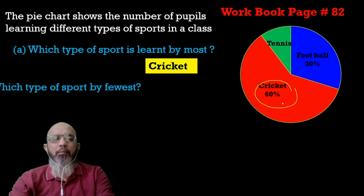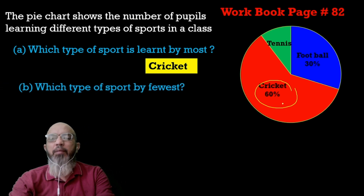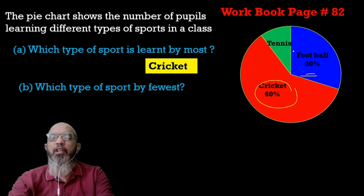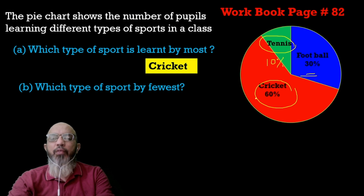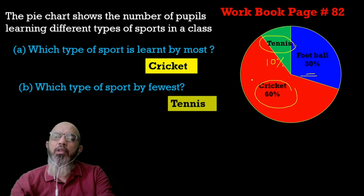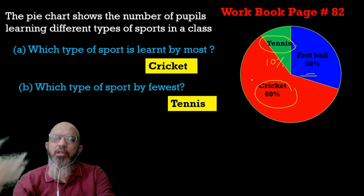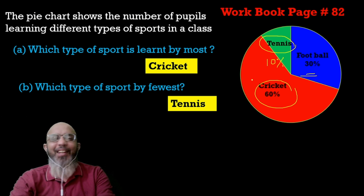The next question: which sport is chosen by the fewest? Cricket is 60 percent and football is 30 percent. If the total is 100 percent, the percentage left is 10 percent — so 10 percent of students choose tennis. Tennis is chosen by the fewest students, at 10 percent.